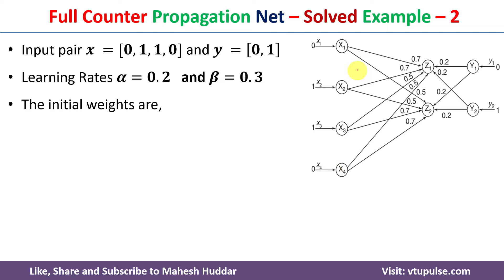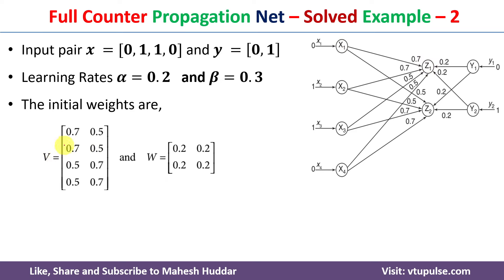We have also been given the initial weights. The weights between input X and z1 are 0.7, 0.7, 0.5, and 0.5, as written in this column. The weights between X and z2 are 0.5, 0.5, 0.7, and 0.7, written in this column. Similarly, the weights between input Y and z1 are 0.2, 0.2, and the weights between Y and z2 are again 0.2, 0.2.